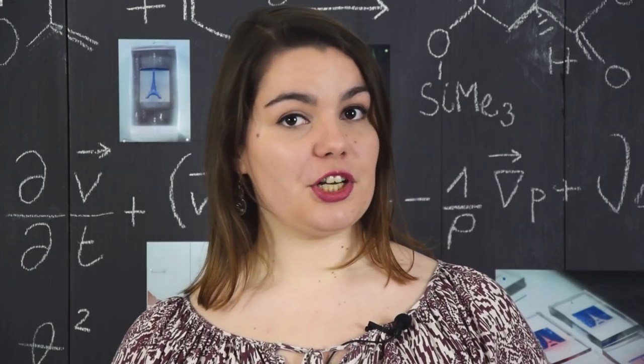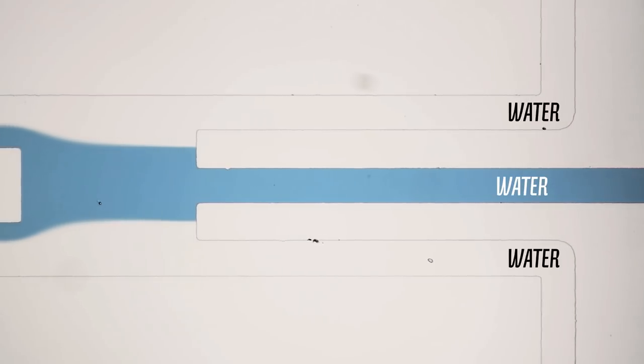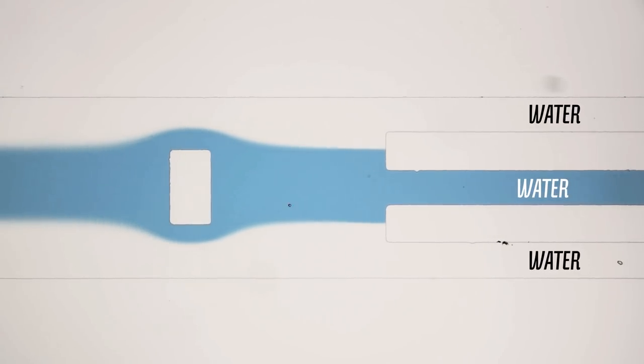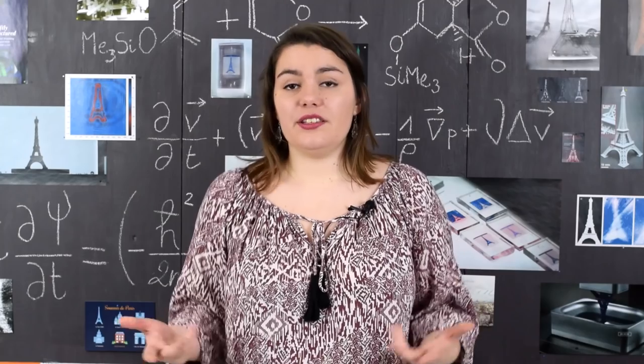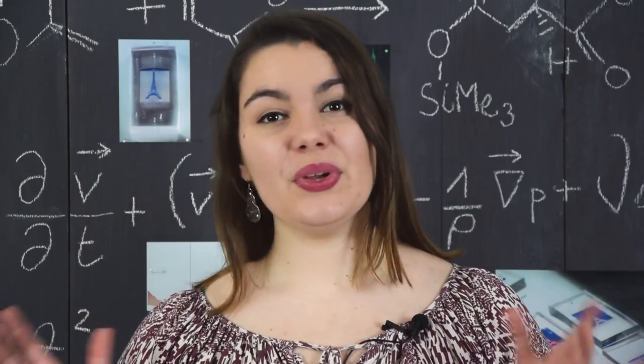But microfluidics isn't limited to droplets. Here's another chip, where this time the liquids won't be separated into droplets. We have three inlets. Water comes through the top and bottom channels, and blue colored water comes through the middle. The channels meet up in a chamber in which an obstacle has been placed. This situation is quite ordinary, it's just water arriving from three different pipes onto an obstacle.